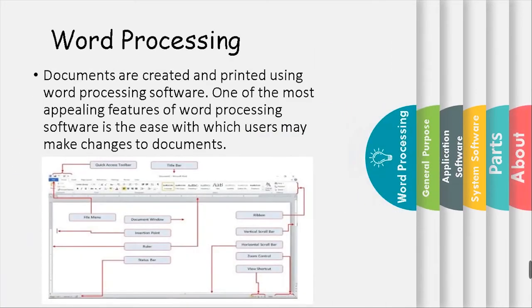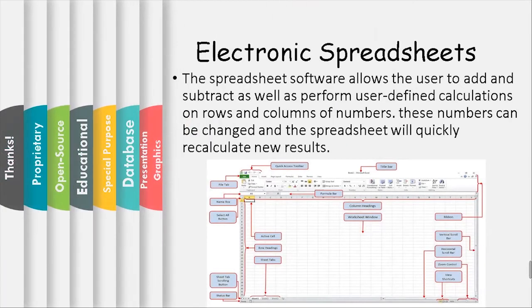Word processing software is used to create and print documents. One of the most appealing features is the ease with which users may make changes to documents. Electronic spreadsheet software allows the user to add, subtract, and perform user-defined calculations on rows and columns of numbers, which can be changed so the spreadsheet quickly recalculates new results.